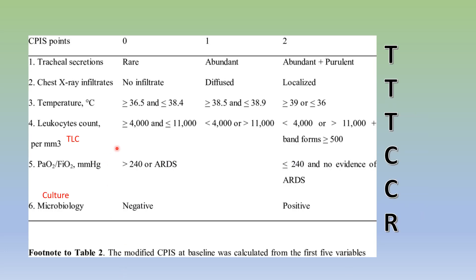The CPIS score has six variables with points ranging from 0, 1, and 2. The six variables include: tracheal secretion, chest X-ray, temperature, total leukocyte count, ratio of PaO2 by FiO2, and culture.